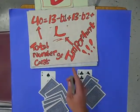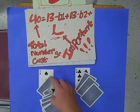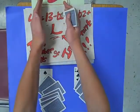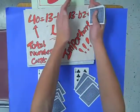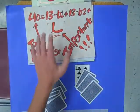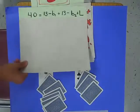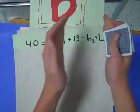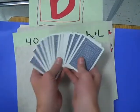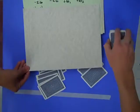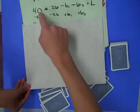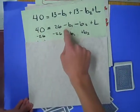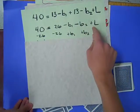Now, 13 minus base 1 plus 13 minus base 2. Instead of saying that, we can say pile 1 plus pile 2 is 40. So 40 equals pile 1 plus pile 2 plus the leftovers. To find the leftovers, we're going to do 40 equals 26 minus base 1 minus base 2 plus the leftovers.